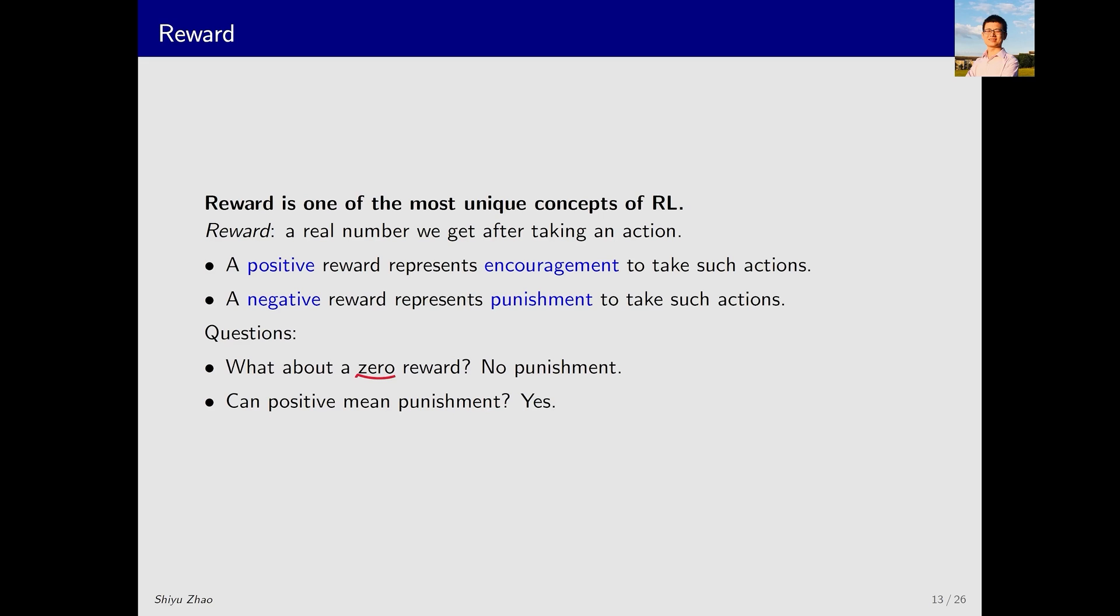The second question is whether we can use positive numbers to represent punishment and negative numbers for encouragement. It is possible and it's just a mathematical trick. If positive numbers indicate encouragement, the agent aims to obtain more positive rewards. Conversely, if positive numbers represent punishment or cost, the agent naturally seeks to minimize the cost.